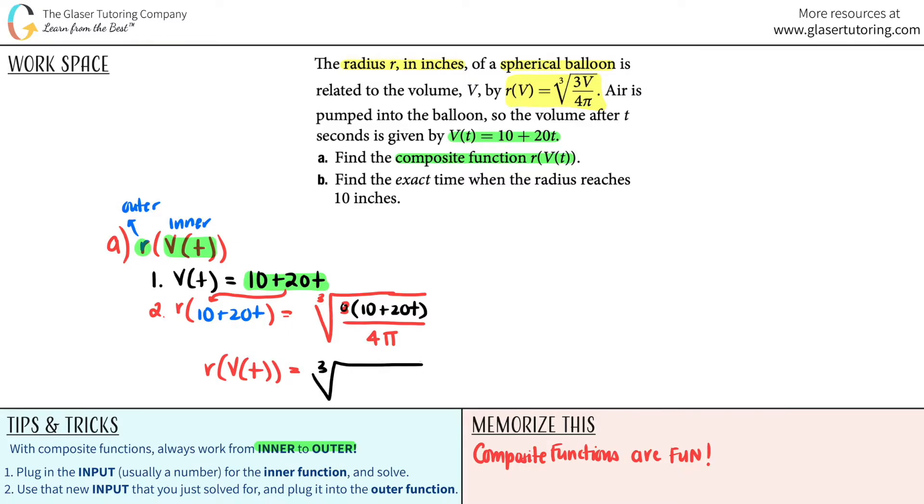the 3 has to get multiplied by the 10 and by the 20t. So you can say 3 times 10 is 30 plus 60t all over 4π.